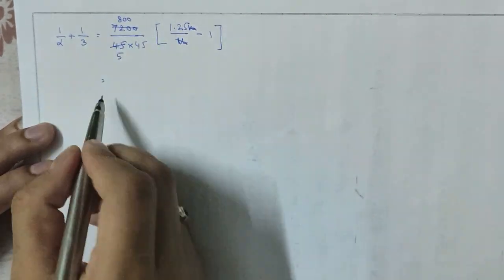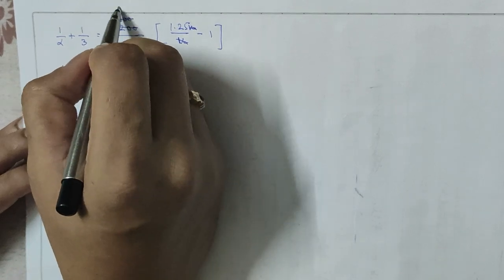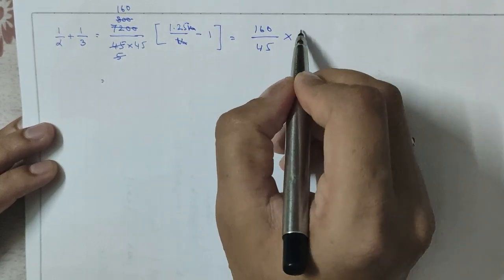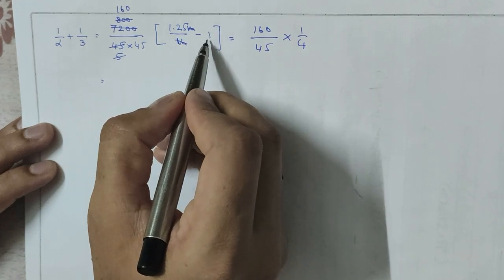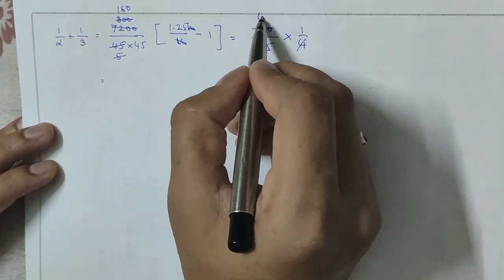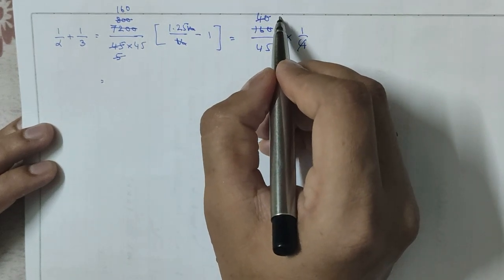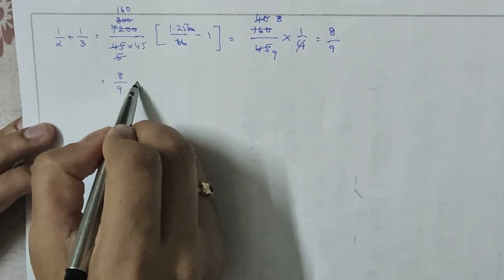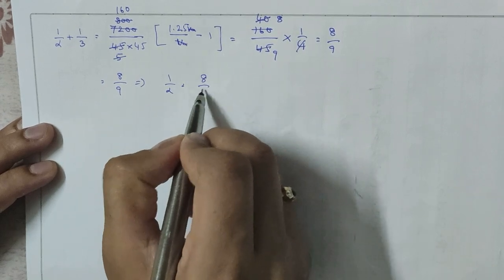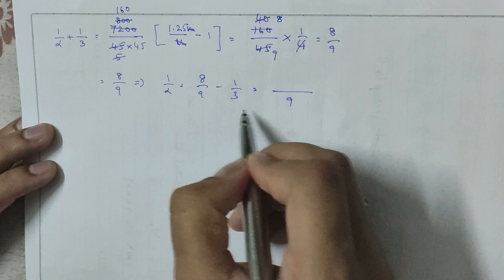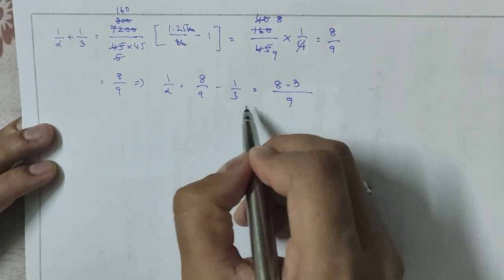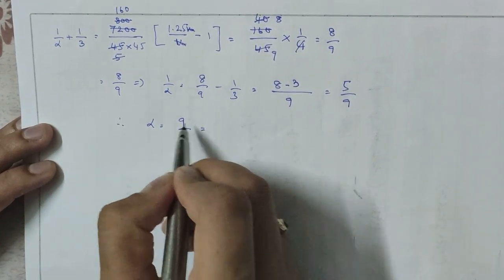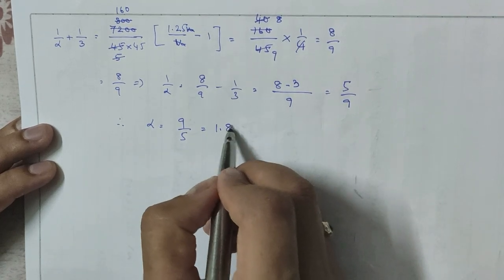After calculation, 1/α + 1/3 = 8/9. Since 1.25 − 1 = 0.25 = 1/4, simplifying gives 8/9. Therefore 1/α = 8/9 − 1/3. The LCM is 9, so 1/α = (8 − 3)/9 = 5/9. Therefore α = 9/5 = 1.8 kmph/s.